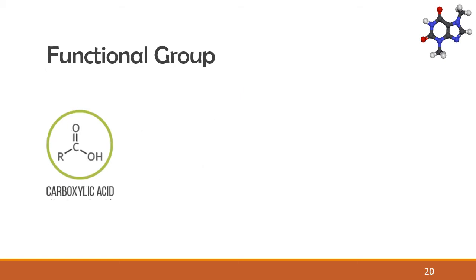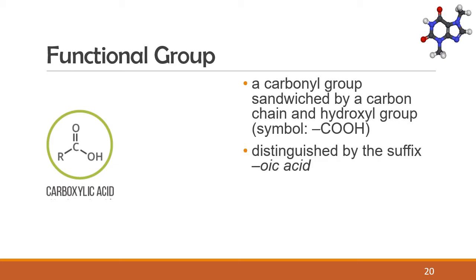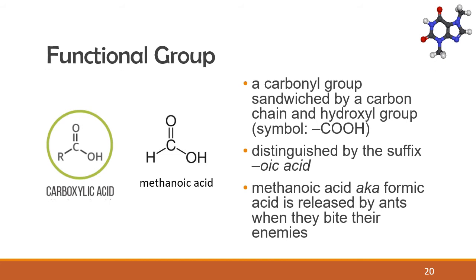Then we have carboxylic acid. A carboxylic acid has a carbonyl group sandwiched by a carbon chain and a hydroxyl group. It is symbolized by COOH. Carboxylic acids are distinguished by the suffix "-oic acid" in their name. Methanoic acid, also known as formic acid, is released by ants when they bite their enemies. You may have already felt this formic acid when an ant bites you and it itches.